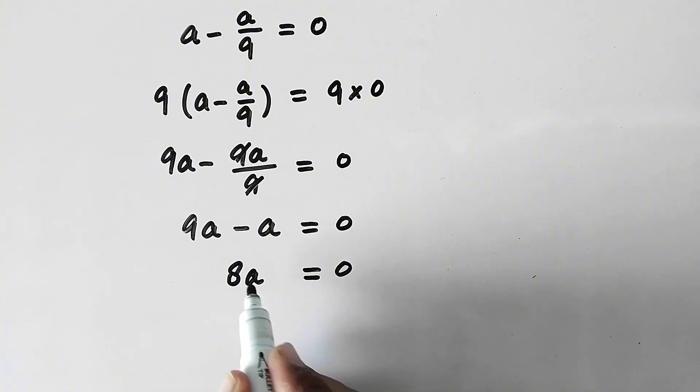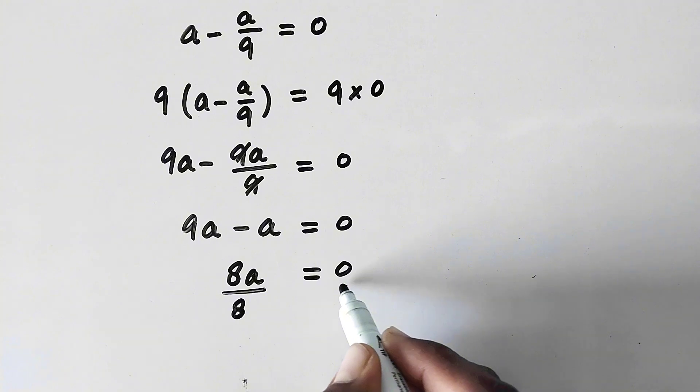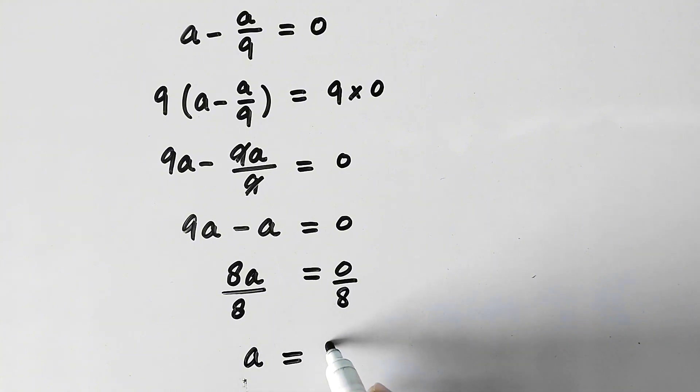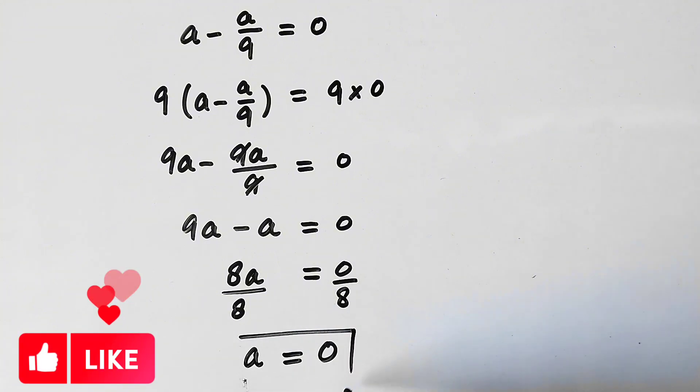Or 9a minus a will be equal to 8 times a equal to 0. And since we have to find the value of a, so we need to eliminate this 8. Therefore we will divide it by 8 and we will also divide the right hand side by 8. So now here we will get a equal to 0.